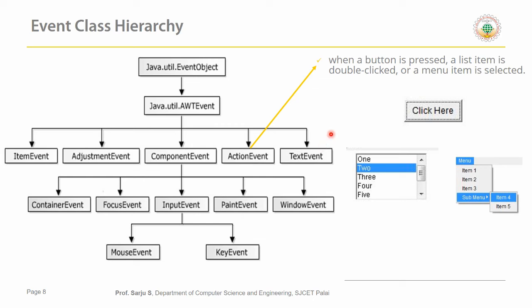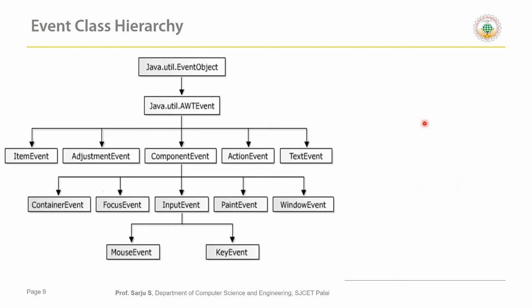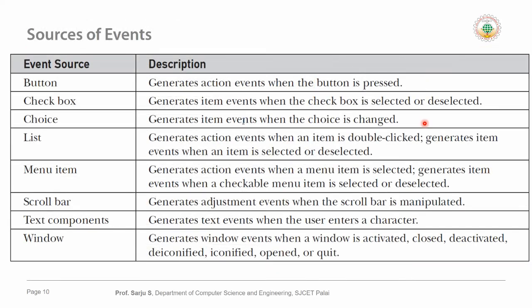ActionEvent is generated when a button is pressed, a list item is double-clicked, or a menu item is selected. Note that a single list item selection generates an ItemEvent, but a double-click on a list item generates an ActionEvent. TextEvent is generated when we perform some operations in the text area.